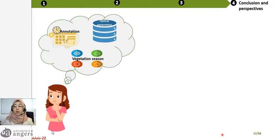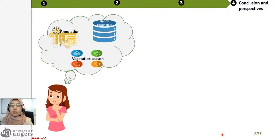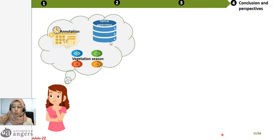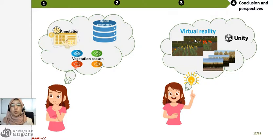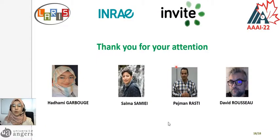However, a limitation of our approach is that it is very slow because we need a large annotated dataset. It takes time, and the dataset can only be gathered during the vegetation season with all optical parameters covered. So, we are now thinking of using virtual reality to speed up our approach — we can simulate large annotated datasets with all parameters. This is our future work. Thank you for your attention.